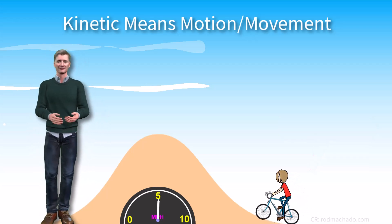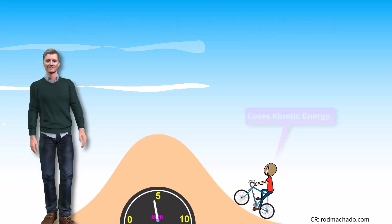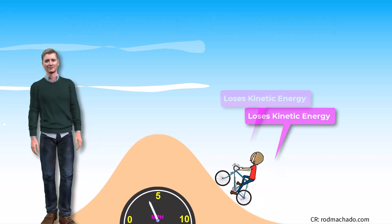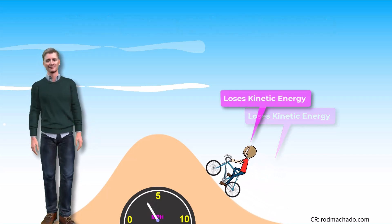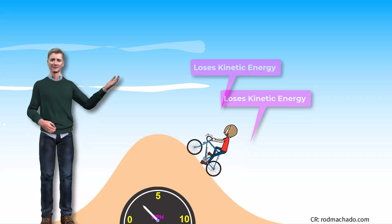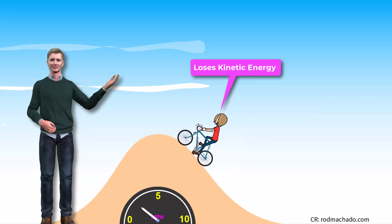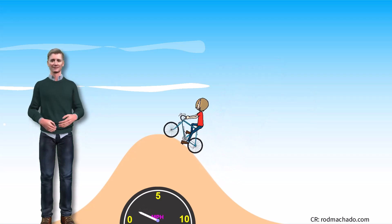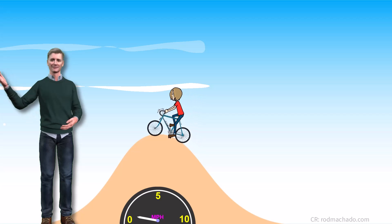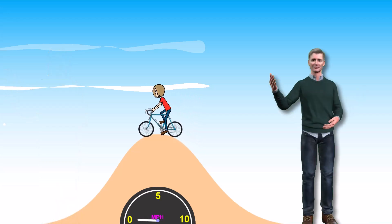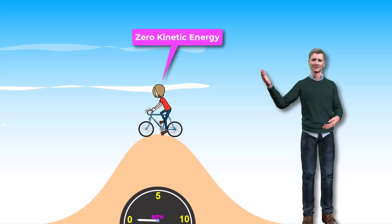At the bottom of the hill, the bicycle stops pedaling and moves uphill using only its kinetic energy. As kinetic energy decreases, the bicycle slows down and comes to a complete stop at the top of the hill. It now has zero kinetic energy.